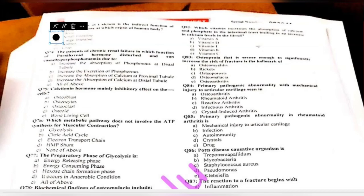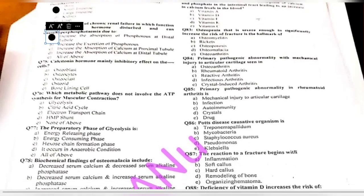Question 74: a patient with chronic renal failure has disturbed parathyroid hormone function, causing hyperphosphatemia. This is due to — increased absorption of phosphorus in distal tubules, increased excretion of phosphorus, increased absorption of calcium, or all of the above? Hyperphosphatemia is caused by increased absorption of phosphorus in the distal tubules.